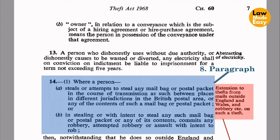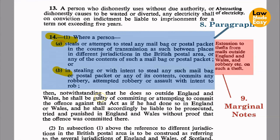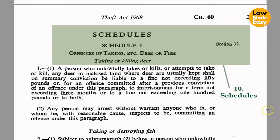Paragraphs within the statute — for example, paragraphs 14(1)(a) and 14(1)(b): number 14 is the main section, 1 is the subsection, and A and B are paragraphs within the subsection. Sometimes they are further divided into subparagraphs. Marginal notes — for example, 'extension to thefts from males outside England and Wales' and 'robbery etc. on such a theft' — are notes that normally explain the contents of each section. Please note they are not part of the Act and are not referred to by courts in relation to interpretation; they are disregarded when it comes to interpreting statutes.